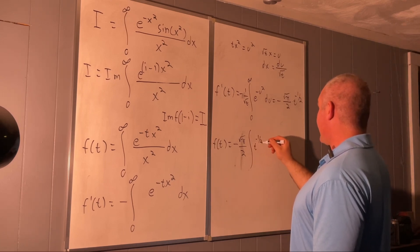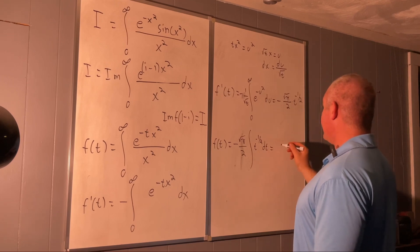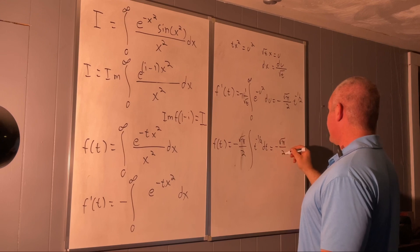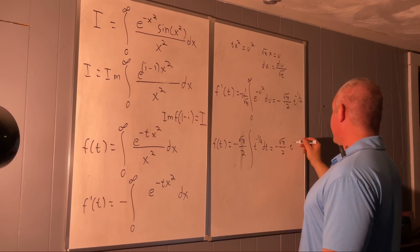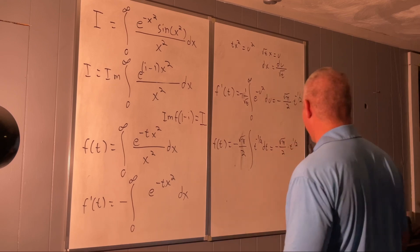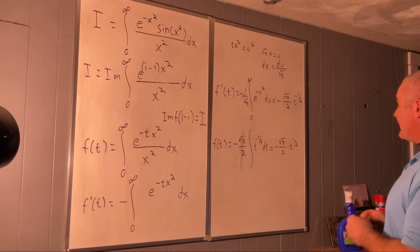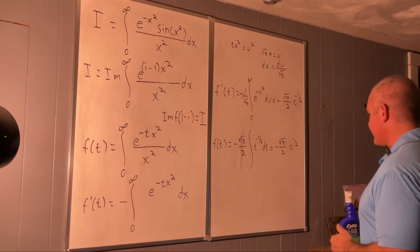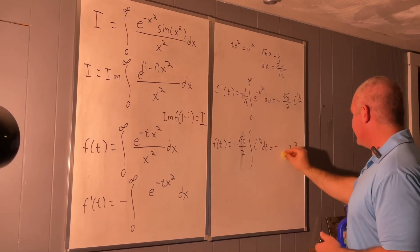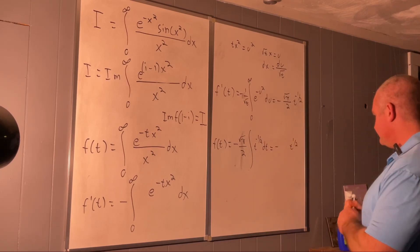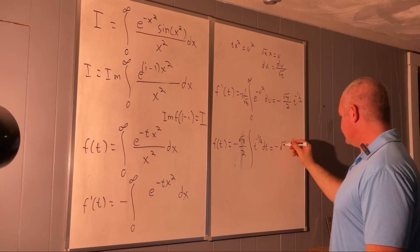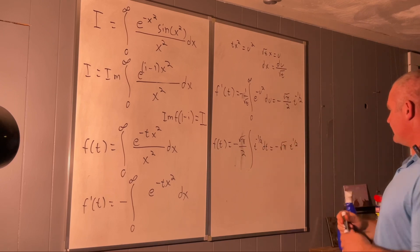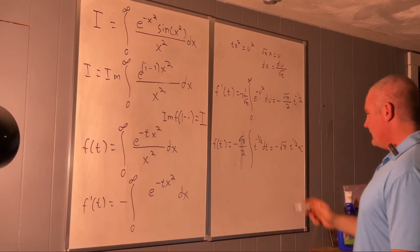That equals negative square root of pi over two times t to the one half over one half, which is the same as negative square root of pi times t to the one half times two, plus C.